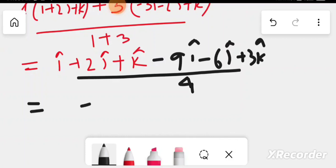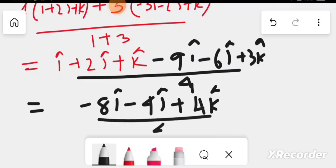Simplifying: i minus 4j plus 4k by 4, which equals minus 2i minus j plus k.